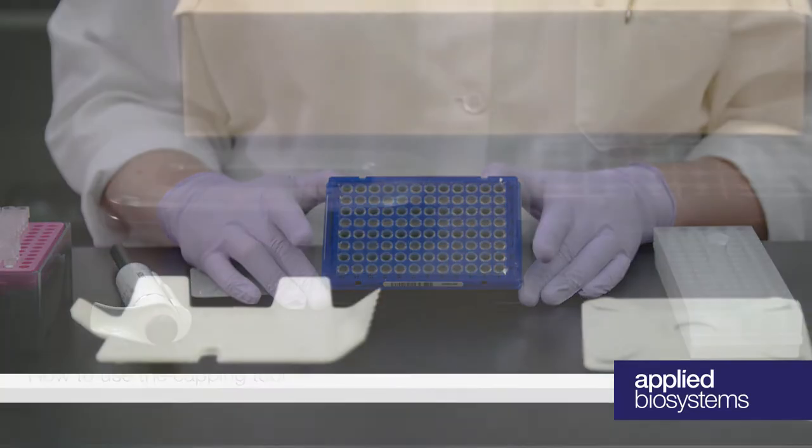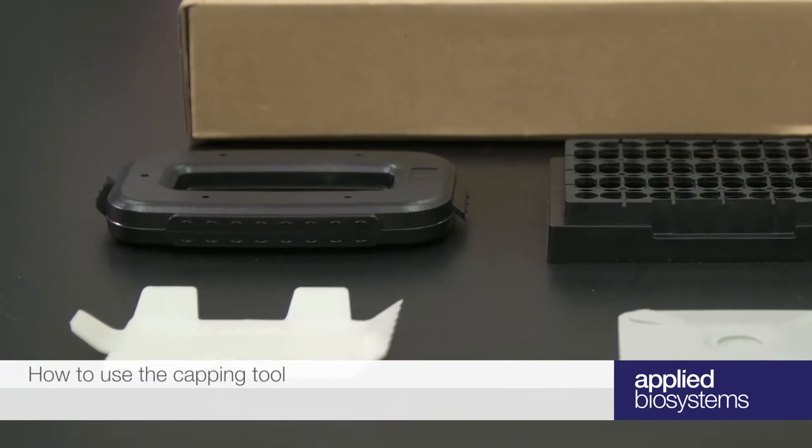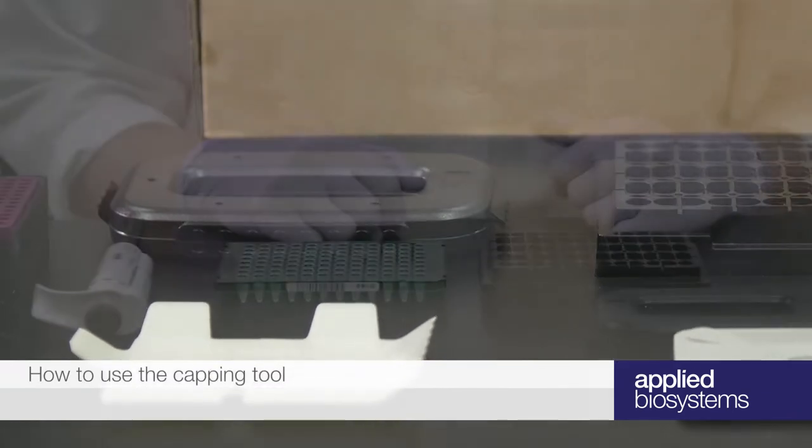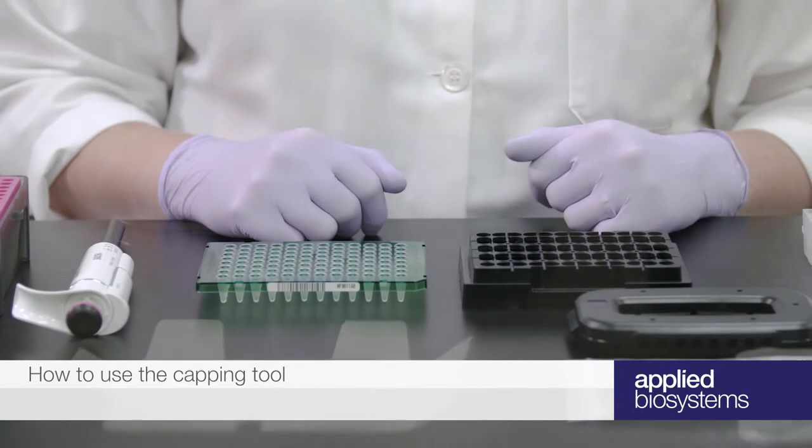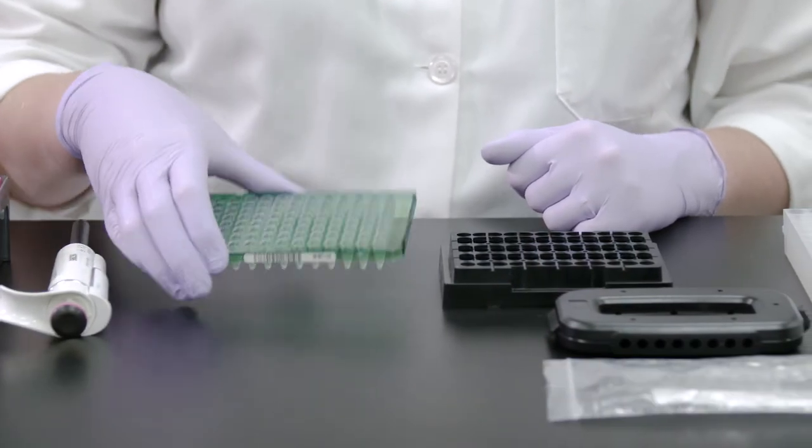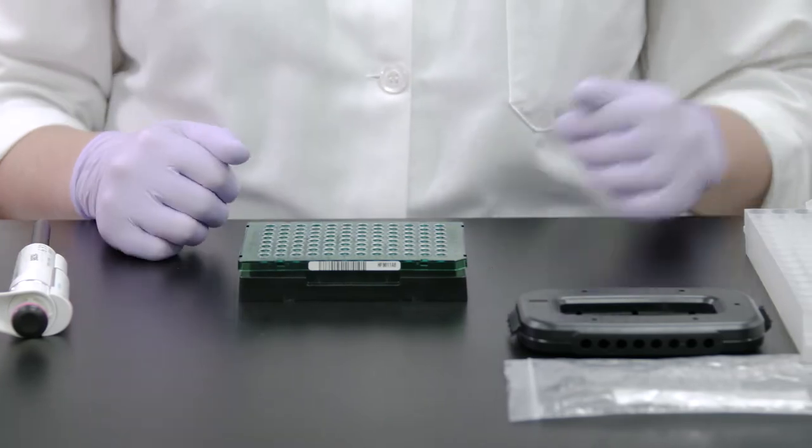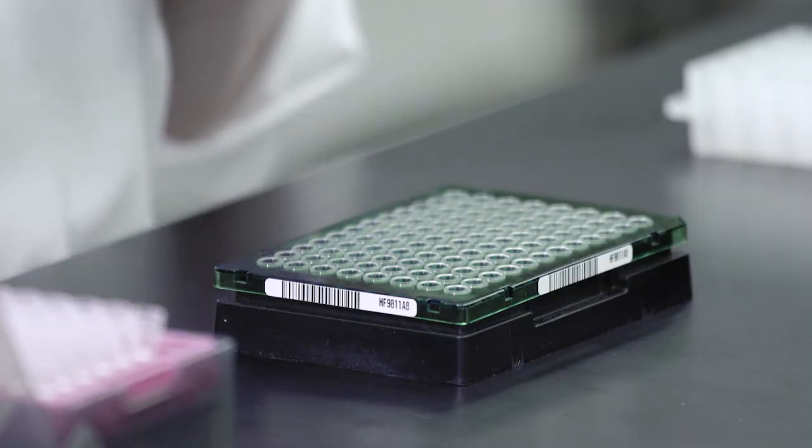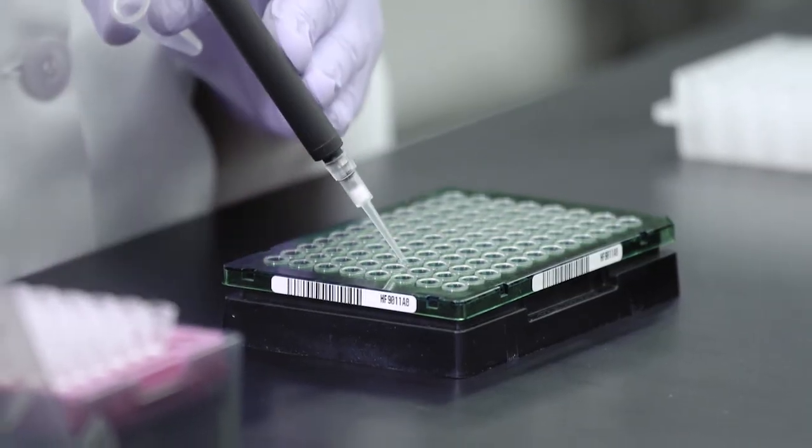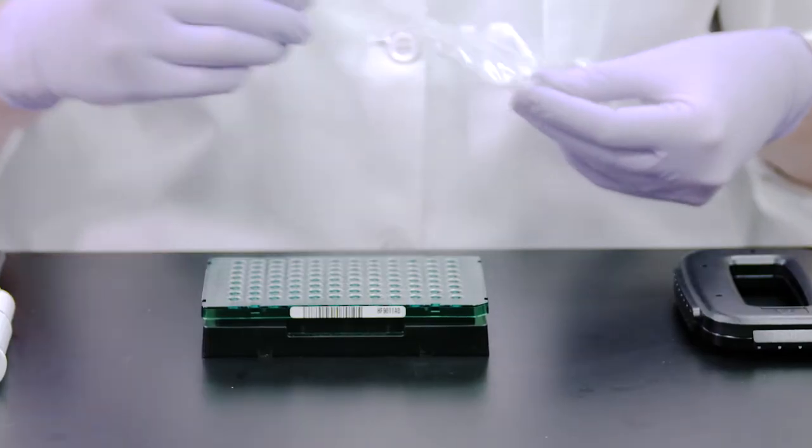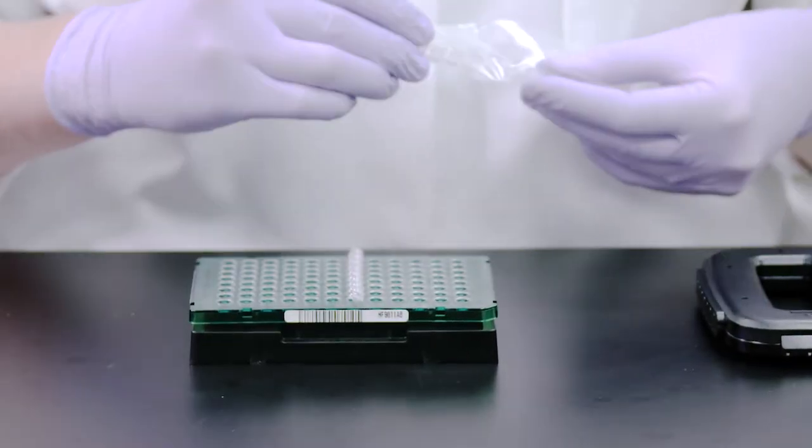Use of the capping tool makes it easy to securely seal a plate when using cap strips. To seal your plate using cap strips, first place your plate securely in the PCR plate rack. After pipetting your PCR samples, remove the cap strip from the packaging and align the cap strip to the designated wells.